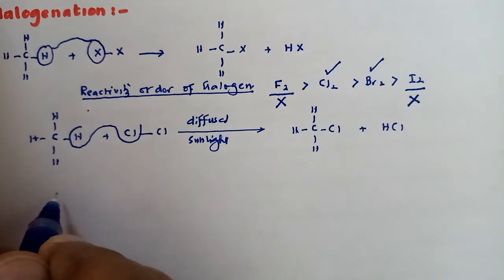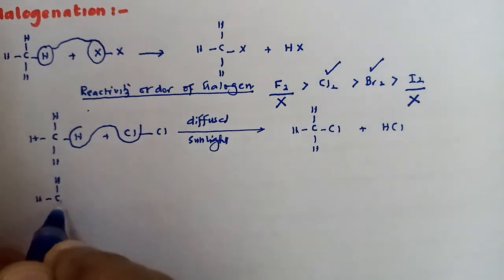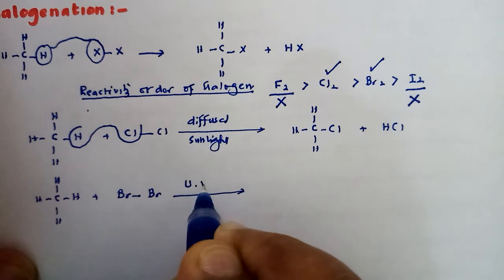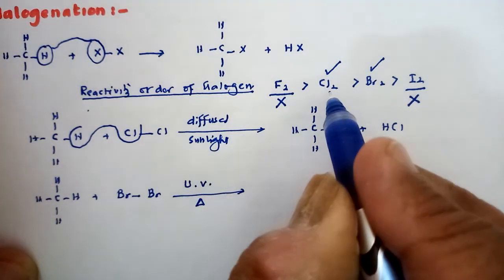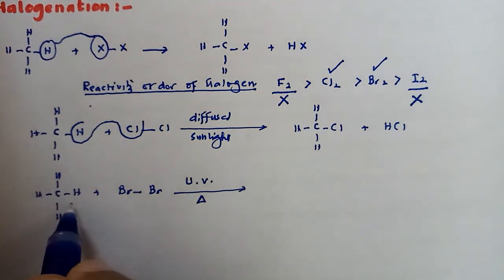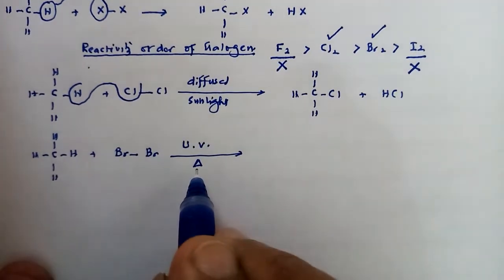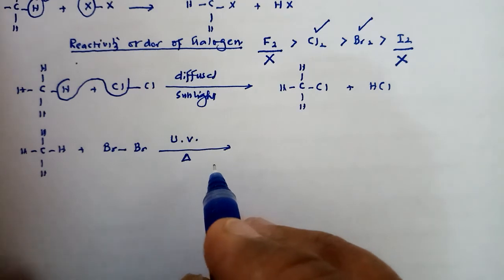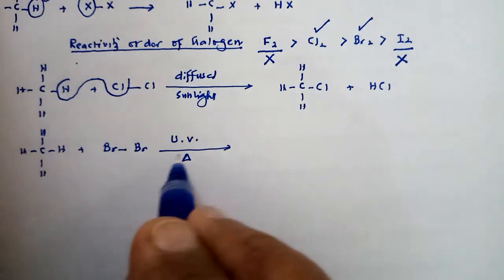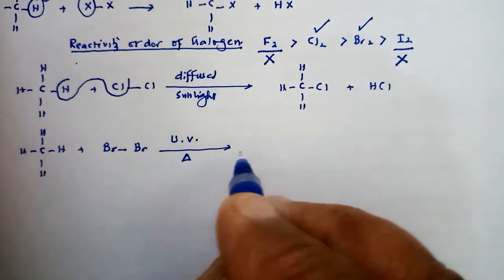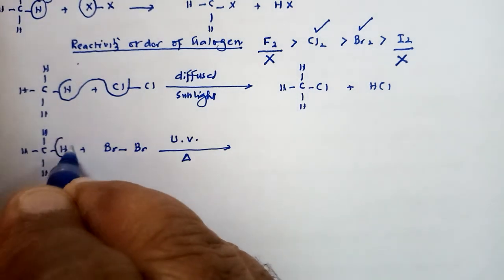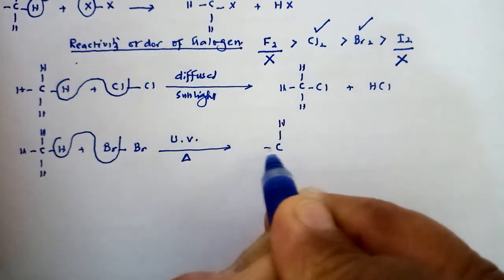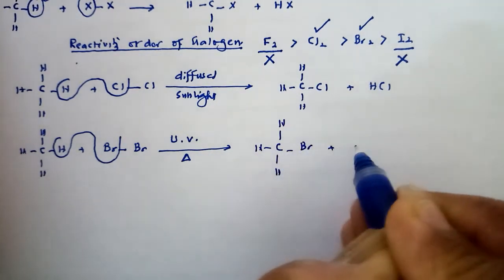In the same way, if we react methane with bromine, this reaction occurs in the presence of ultraviolet light or heat, because bromine's reactivity is less than chlorine. So if we want to react alkane with bromine, we need drastic conditions — ultraviolet light or heat energy — as compared to diffused sunlight for chlorination. The products formed are bromomethane and HBr.